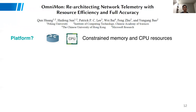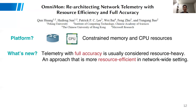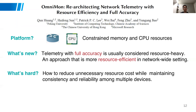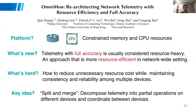The platform targeted is programmable switch and end-host CPU with constrained memory and CPU resources. What's new about this paper is that it tries to achieve better resource efficiency for full-accuracy telemetry. Usually full-accuracy telemetry is considered resource-heavy, but in a network-wide setting with multiple devices, we can do better. The challenge is how to reduce unnecessary resource cost while maintaining consistency and reliability among multiple different devices. The key idea is called Split and Merge — instead of considering different devices separately, you decompose telemetry into partial operations spread across multiple devices, and when needed, coordinate between devices and merge the results.